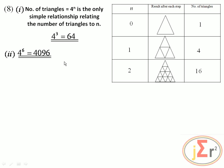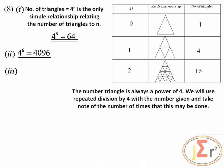A shape has 65,536 triangles and we need to determine the value of n. The number of triangles is always a power of 4. We will use repeated division by 4 with the number given, and take note of the number of times this may be done.